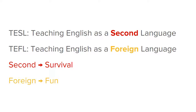In contrast, F can stand for both foreign and fun. When you learn a foreign language, you're generally in a country where that foreign language isn't necessary for survival. You may be learning it for fun or for work or school purposes, but it's not a survival language — it's more of a fun language. So someone learning English in the United States would be learning English as a second language, while someone learning English in China would probably be learning English as a foreign language. That's the distinction between ESL and EFL.